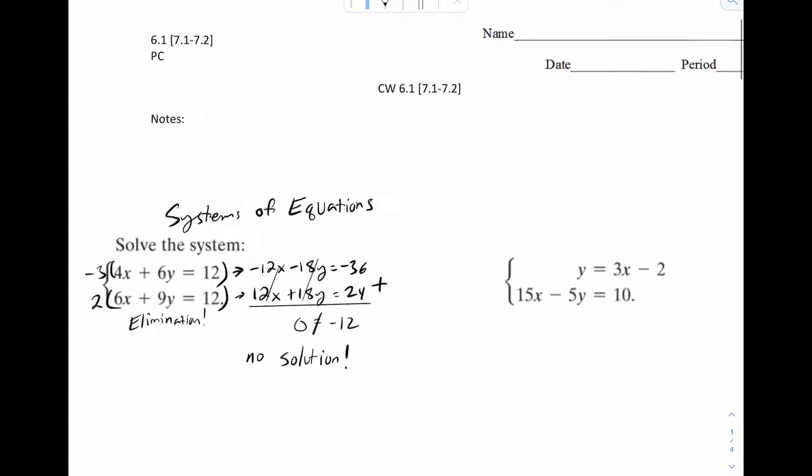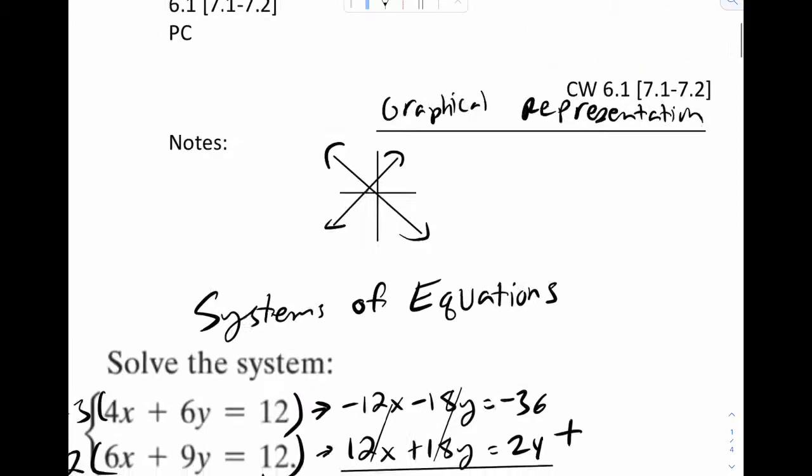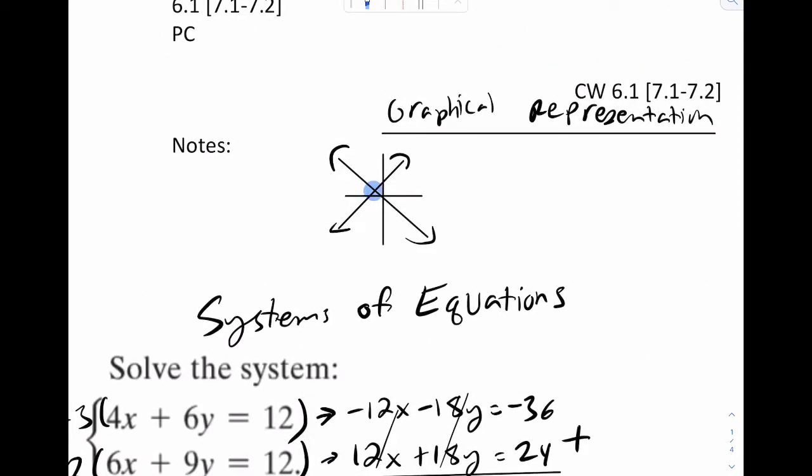So above here, let's put a little note. So the graphical representation of what we're doing is this. In most situations, you have your system and you get one solution. And that would look something like this. One line, you have another line here. This intersection point would be considered your one solution.